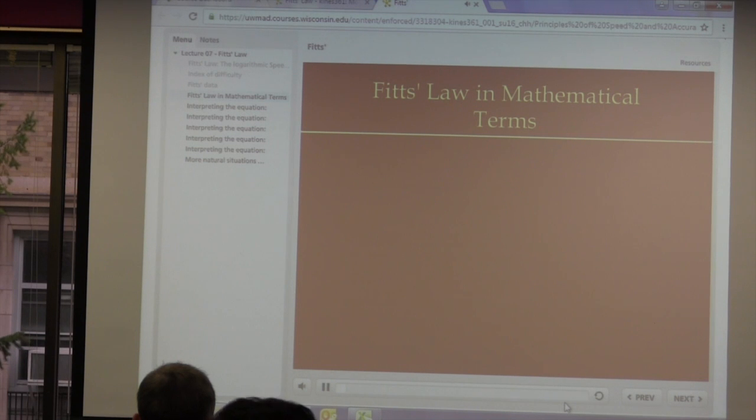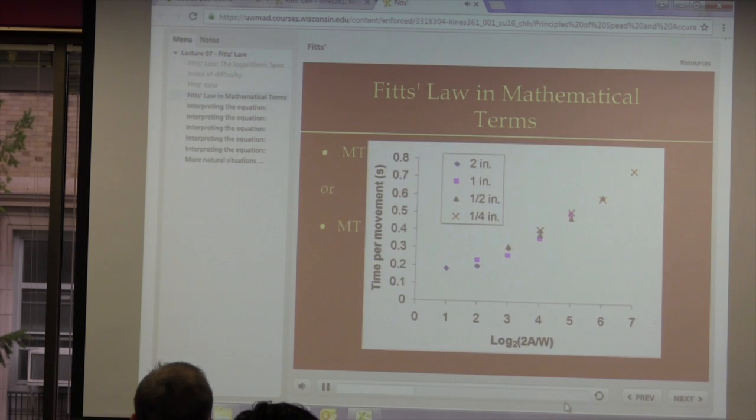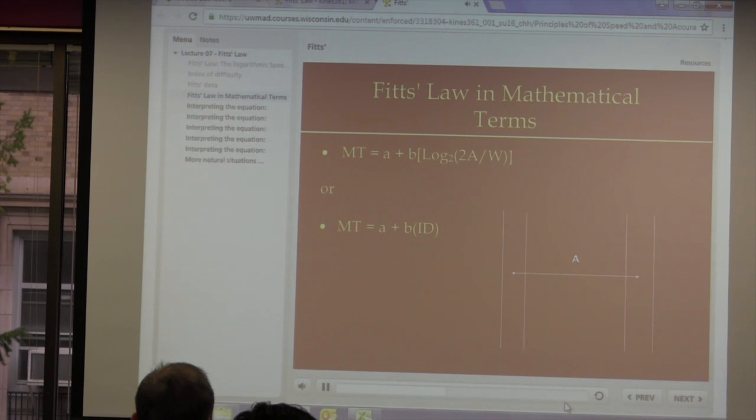So Fitts was able to mathematically model the relationship between index of difficulty and movement time, as MT is equal to A plus B log to the base two, two times A over W. Where MT is your average movement time, A is the y-intercept, B is the slope, large A is the amplitude, so how far you have to move from the center of the left target to the center of the right target, and large W is the width or size of the target that you have to accurately hit. The really cool thing about this equation is that it allows us to predict a person's movement time based on the amplitude of the movement and the size of the target they are aiming to. So if I know your equation, I could predict how long it would take you to aim toward any target given its amplitude and width.